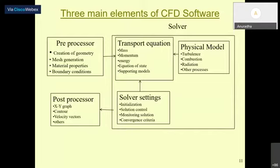In a CFD software, the major stages are: pre-processing, where you create the geometry (solid model), mesh generation, and provide material properties and boundary conditions. Now the computer is ready to execute. In the solver stage, all the physics is converted into mathematical equations. The solver knows what part of the equations must be taken to solve based on the geometry you provide. If there is no discontinuity, the mass, momentum, energy equations and equation of state are applied. If there is discontinuity in the dependent variable, physical models are used to capture it.